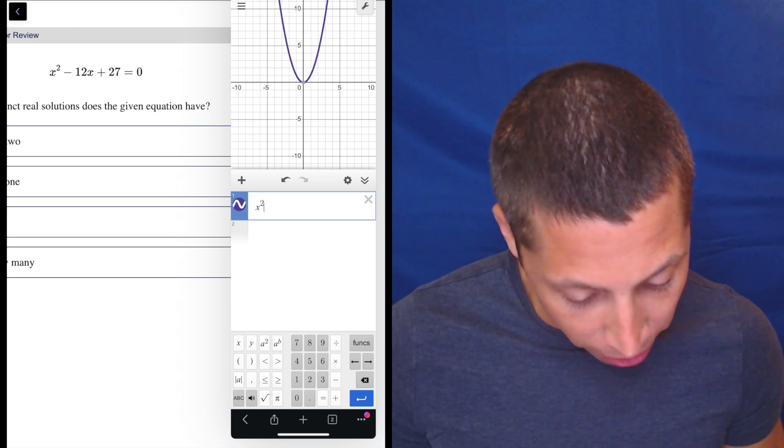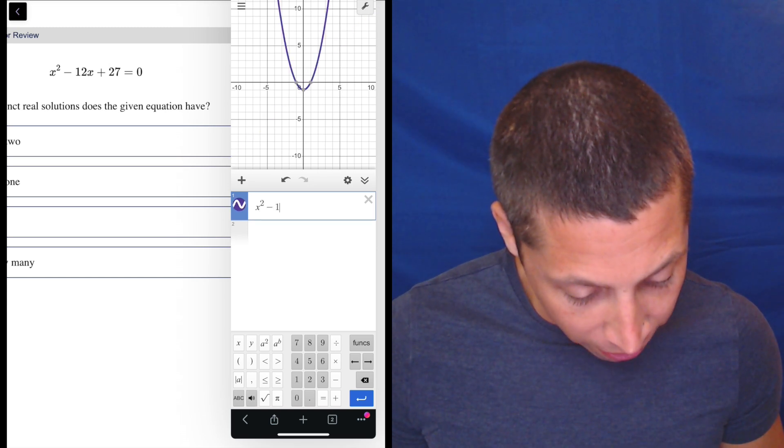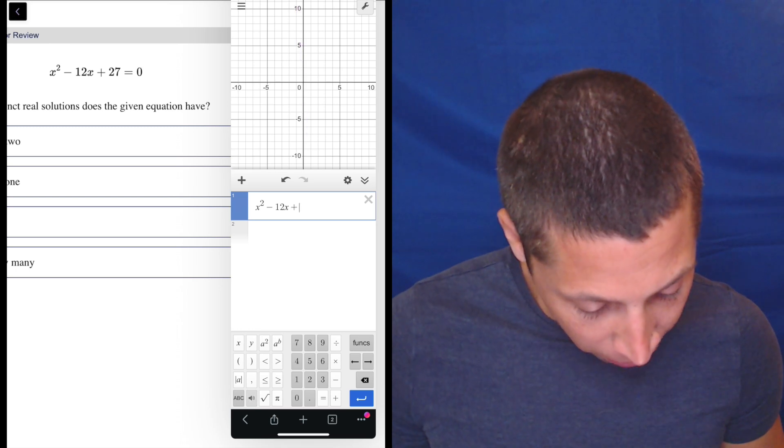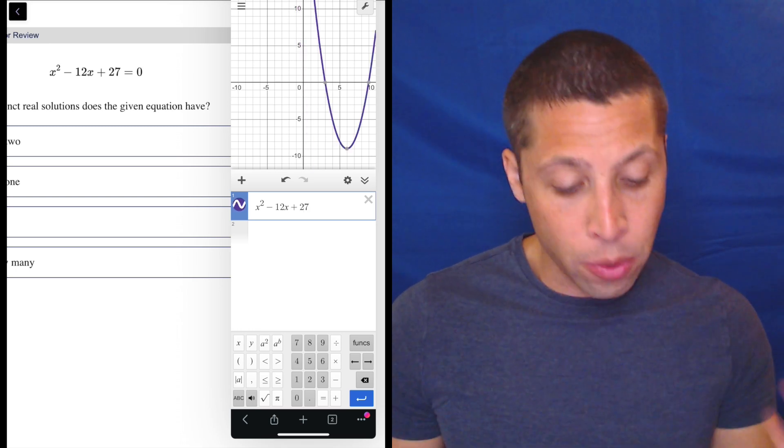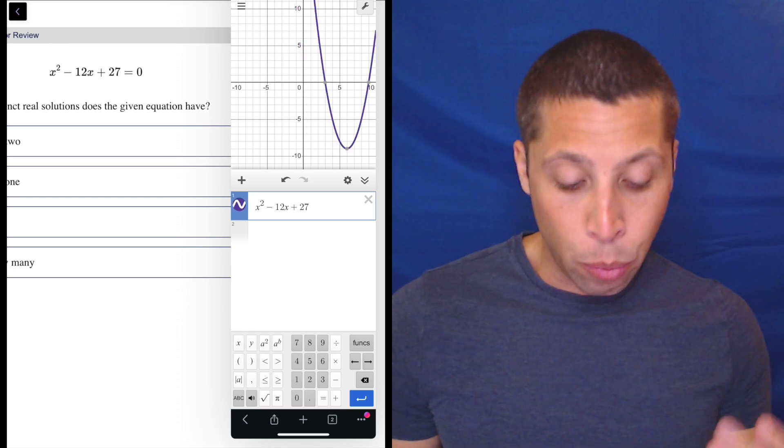So I'm going to type what I've got here. So x squared minus 12x plus 27. And notice when I do that, I have a parabola, which is what I want.